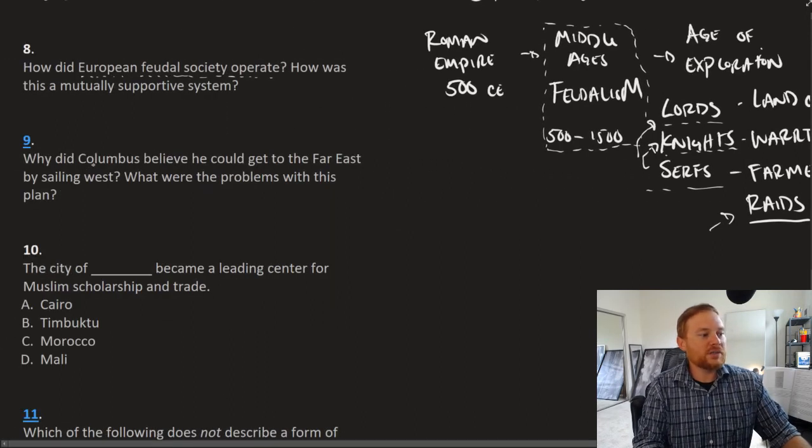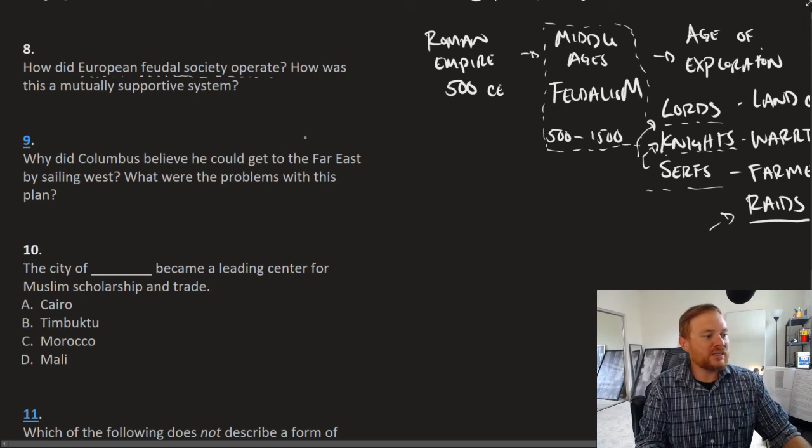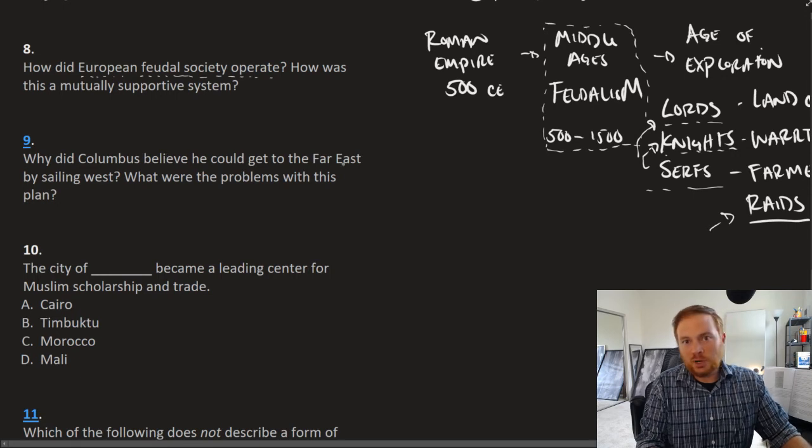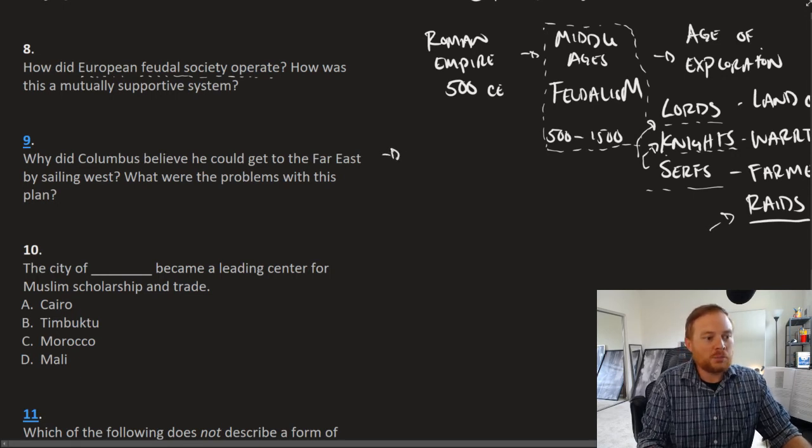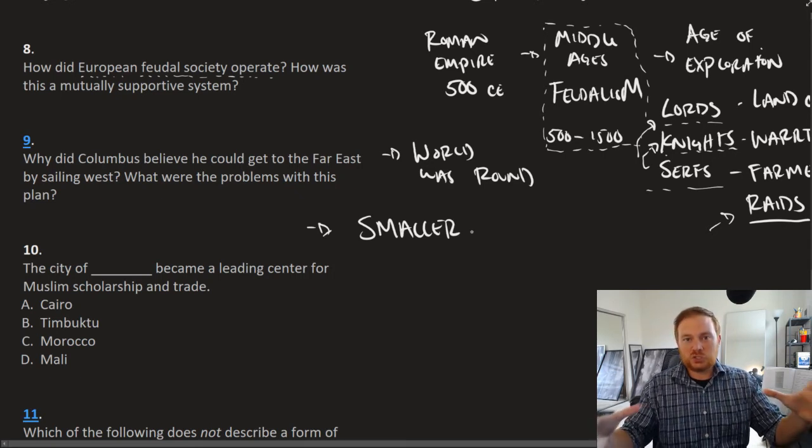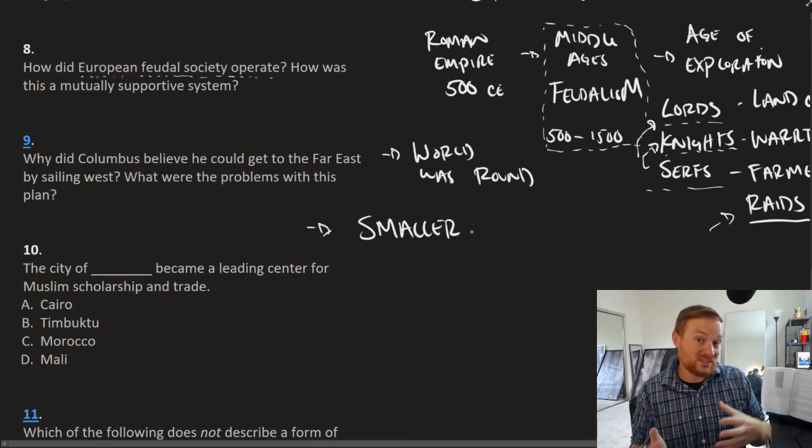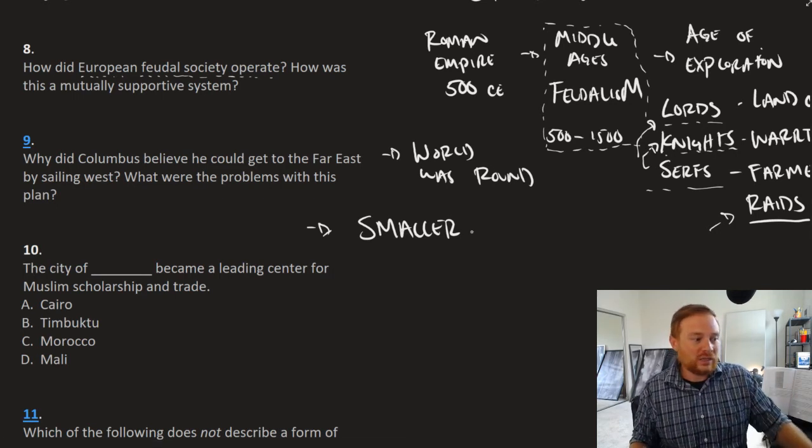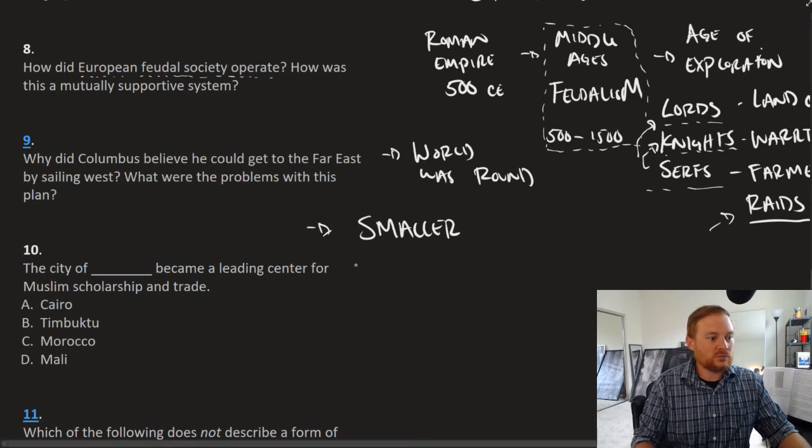Question number nine. Why did Columbus believe he could get to the far east by sailing west? What were the problems with his plan? Contrary to popular imagination, Columbus knew the world was round. So that is not the correct answer. Columbus's big miscalculation. Where did Columbus go wrong? He thought the world was smaller than it actually was. So he believed the world to be much smaller. He anticipated by sailing west that he could get to Asia or India much quicker. That's what his miscalculation was. That was the problem.